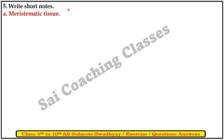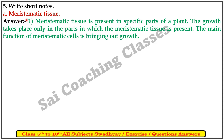Fifth question: Write short notes. First: Meristematic tissue. Answer: Meristematic tissue is present in specific parts of the plant. Growth takes place only in the parts where meristematic tissue is present. The main function of meristematic cells is to bring about growth.